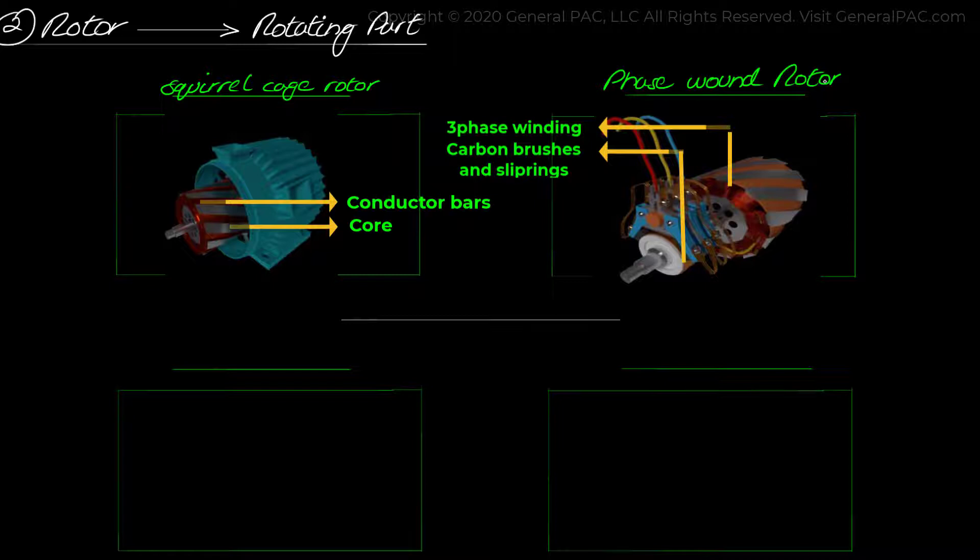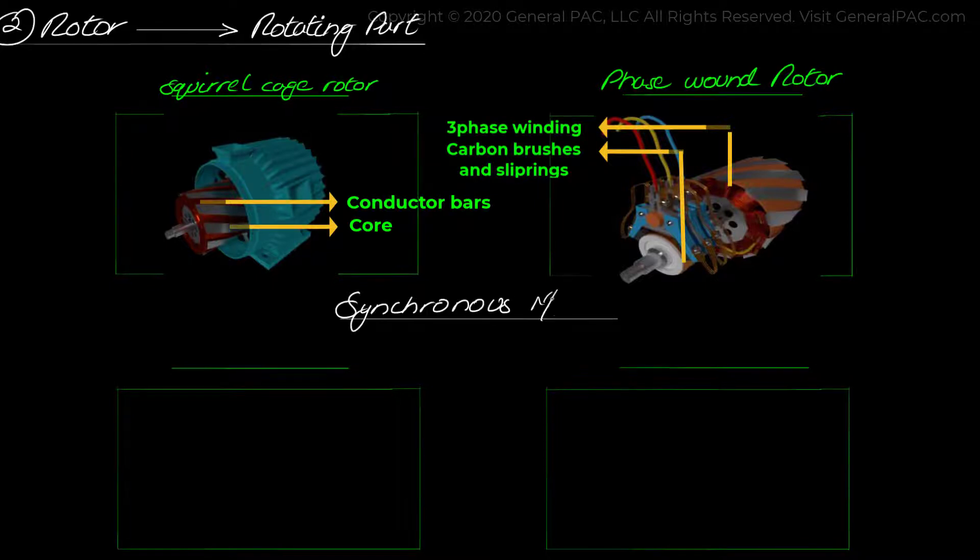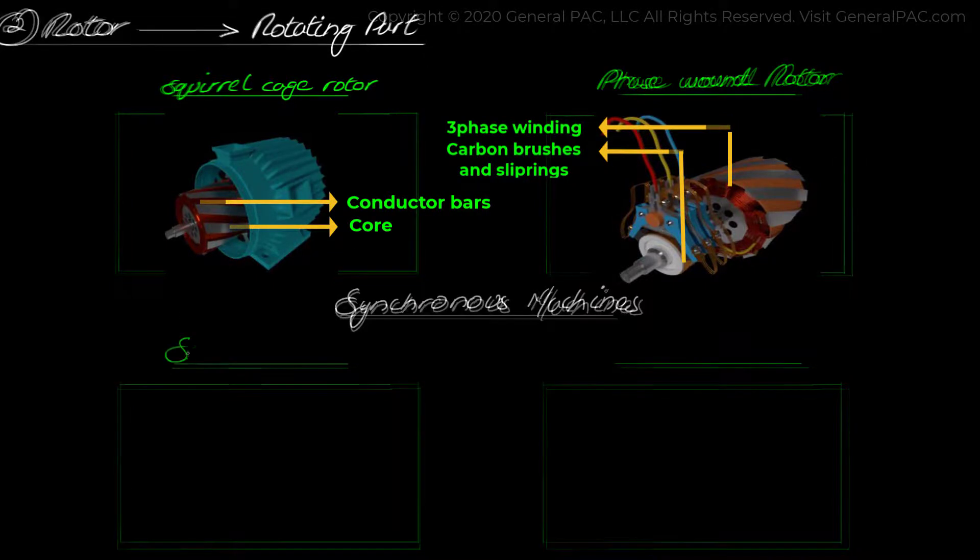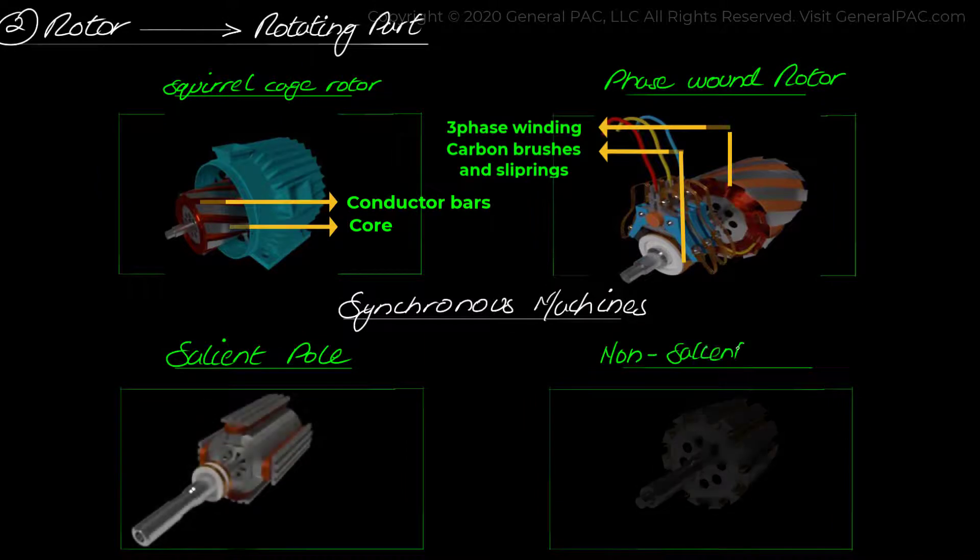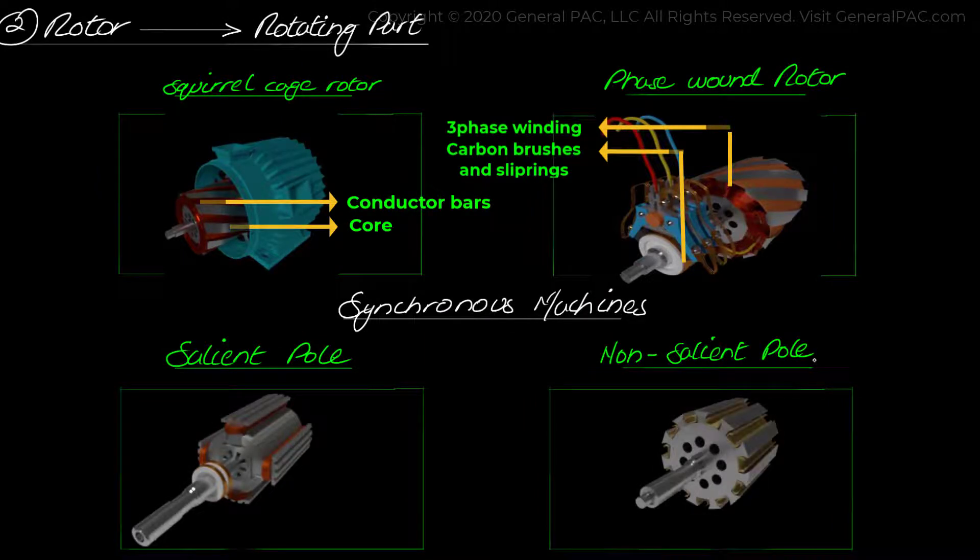There are also two types of rotors in synchronous machines: salient and non-salient poles. The salient poles protrude out of the rotor, while the non-salient poles do not protrude out of the rotor face.